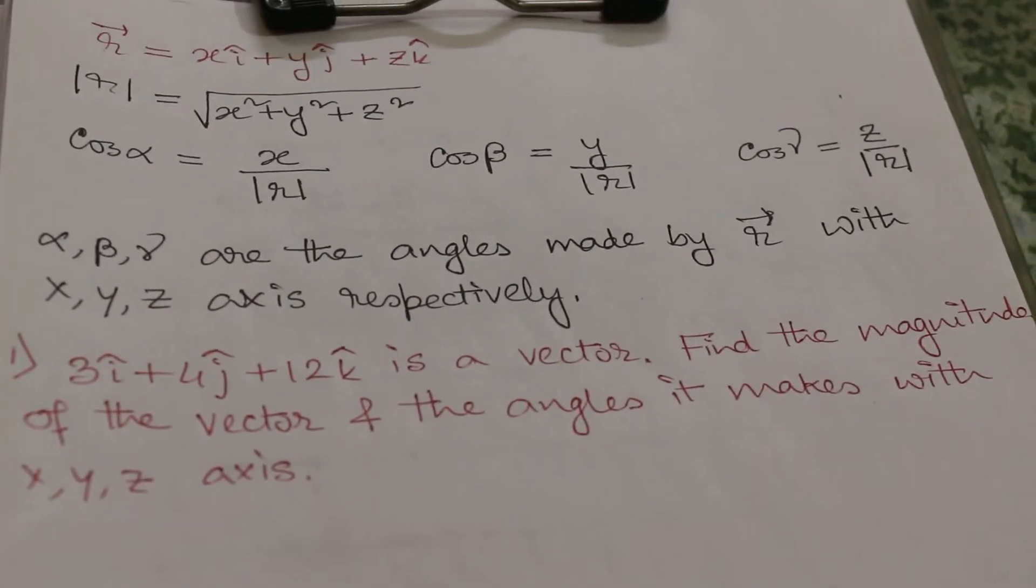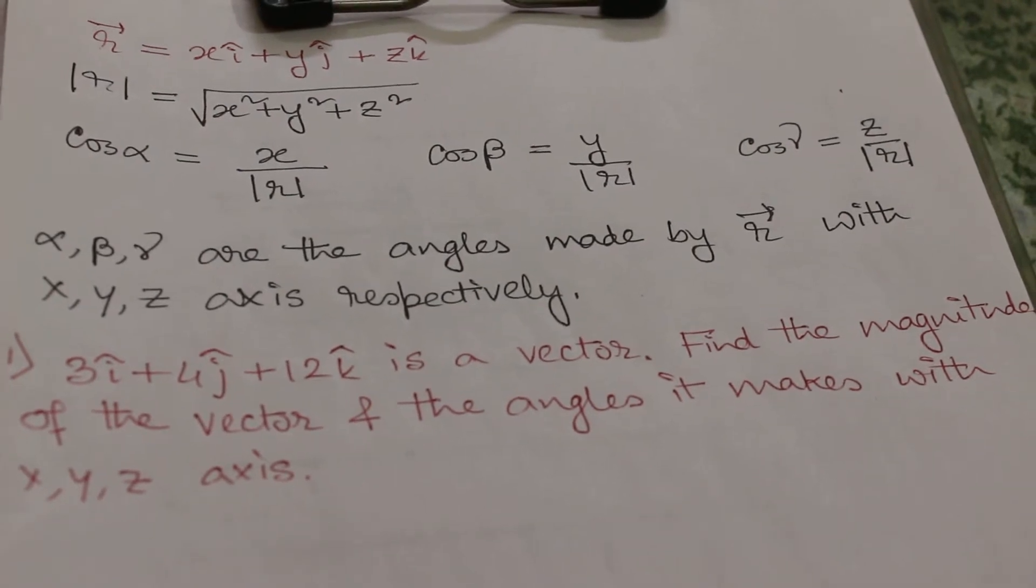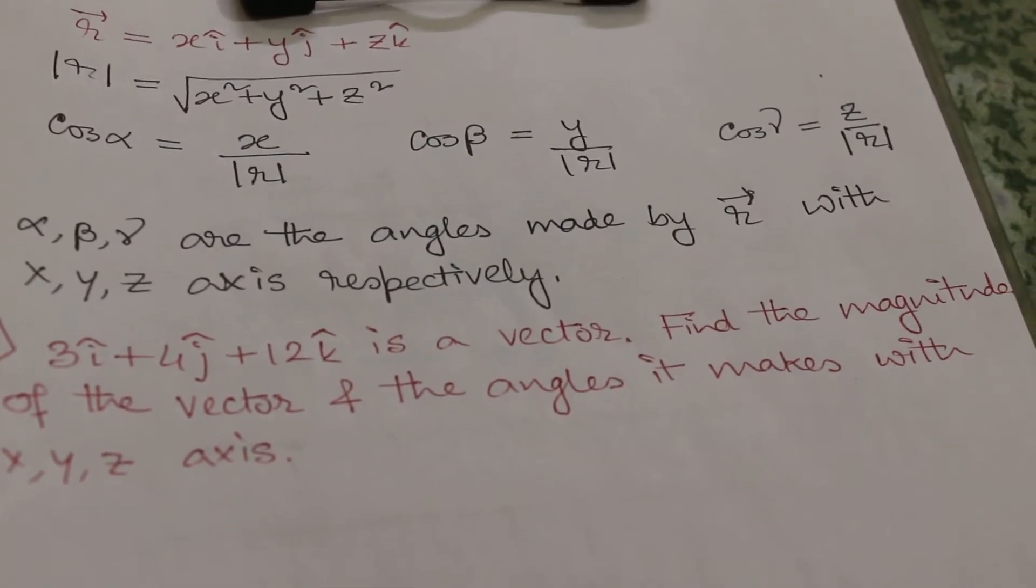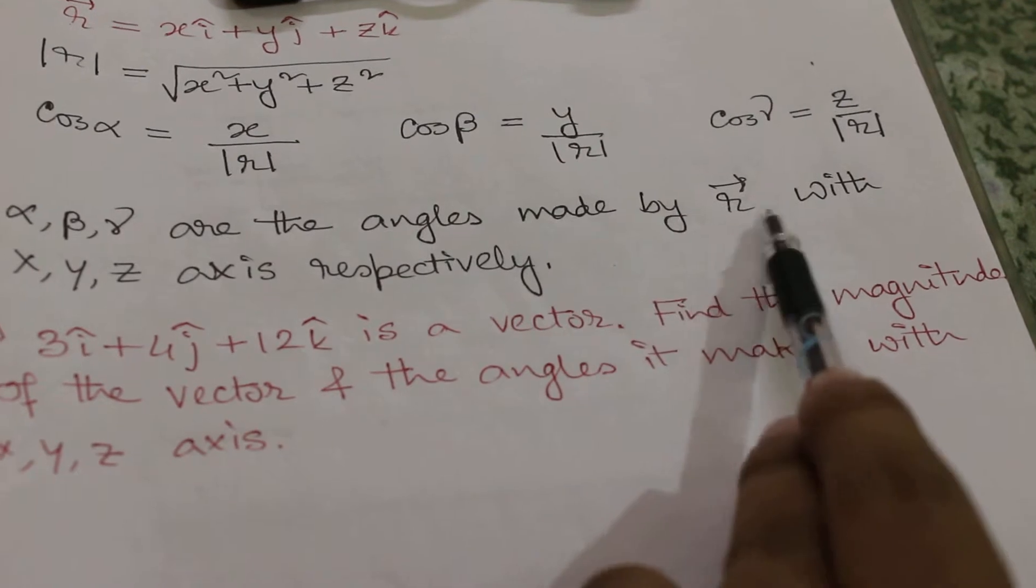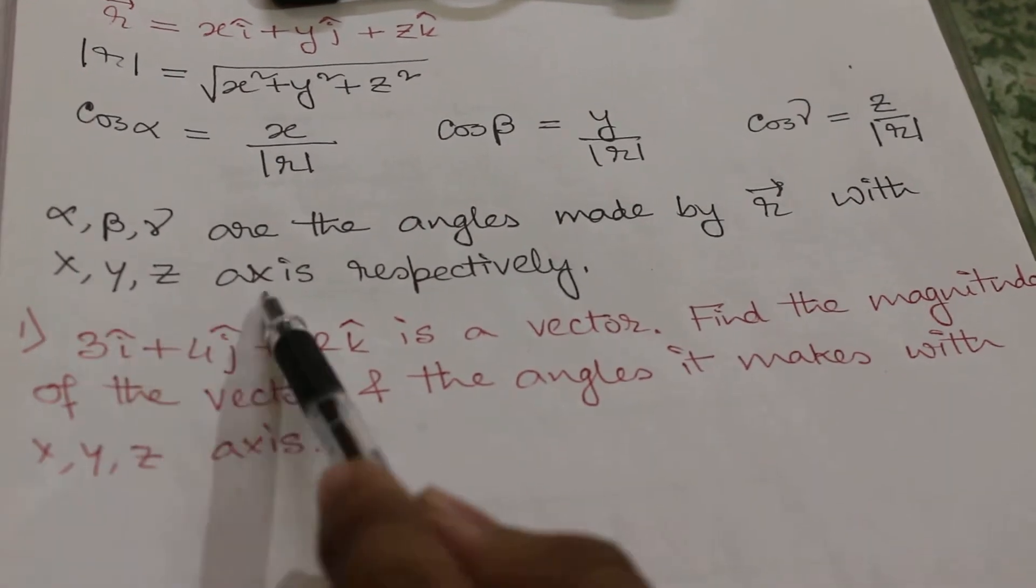Cos alpha, cos beta, cos gamma are known as direction cosines, where alpha, beta, gamma are the angles made by r vector with x, y, z axis respectively.